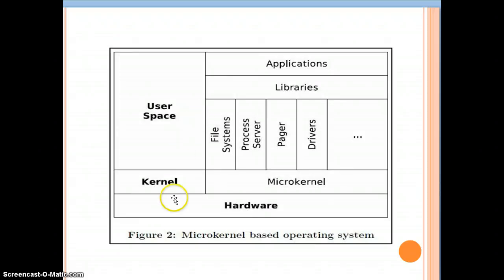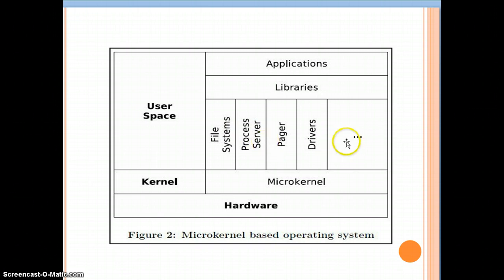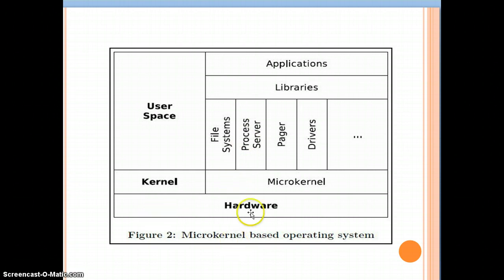As we can see, the user space and kernel space are separated, with the hardware below — the structure is the same as the monolithic kernel. The difference is that in the user space, in addition to application programs and libraries, all the file system, process management, inter-process communication, process server, pager, and drivers are present. The services reside in the user space rather than the kernel space. In the kernel space, only the micro kernel is present, so the kernel size is smaller and execution is faster.